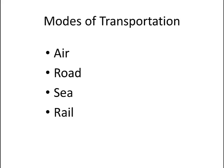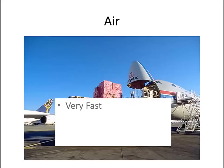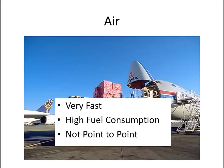Transportation may be categorized into four fundamental modes: air, road, sea, and rail. Air transportation is very expensive and is typically limited to high-value cargoes that are lightweight. Air transportation is characterized by very fast speeds and high fuel consumption, which is why it is so expensive. Air transportation is also not point-to-point, which means that another vehicle, usually a truck, is necessary to pick up and deliver the freight.